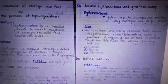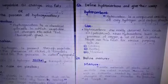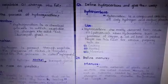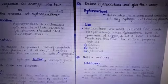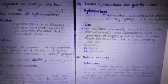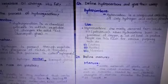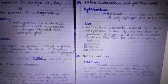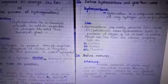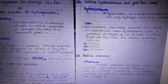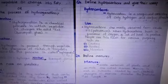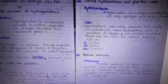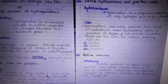Next question: Define hydrocarbons and give their uses. Answer: Hydrocarbon is a compound consisting of only hydrogen and carbon atoms. Hydrocarbons are mostly obtained from crude oil. When hydrocarbons burn in the presence of oxygen, a lot of heat is produced. People use this heat for the following purposes: cooking, heating, and movement.